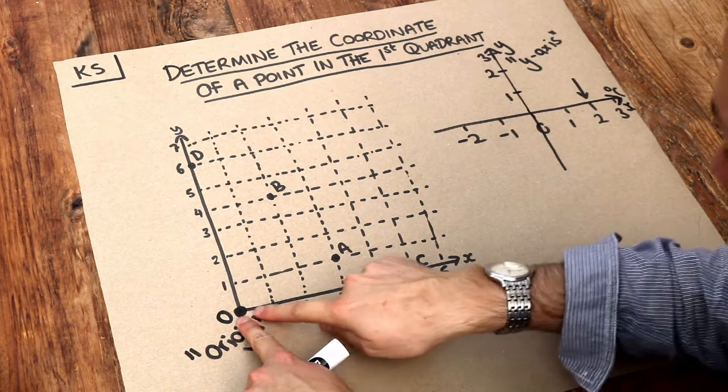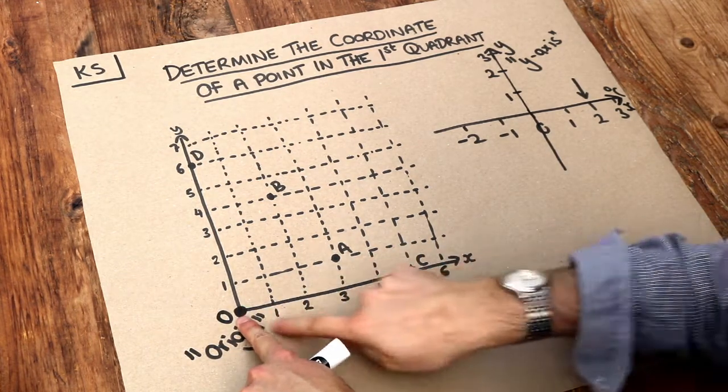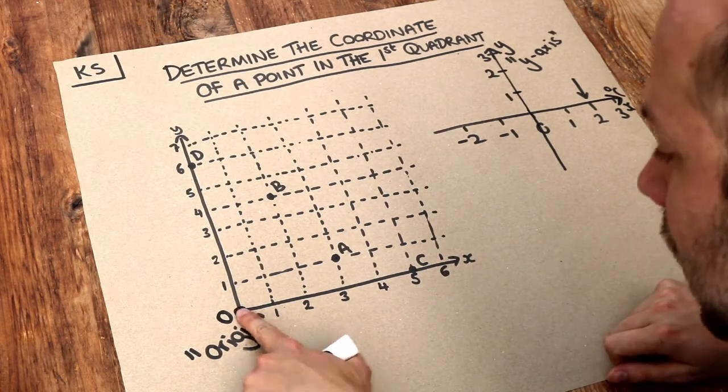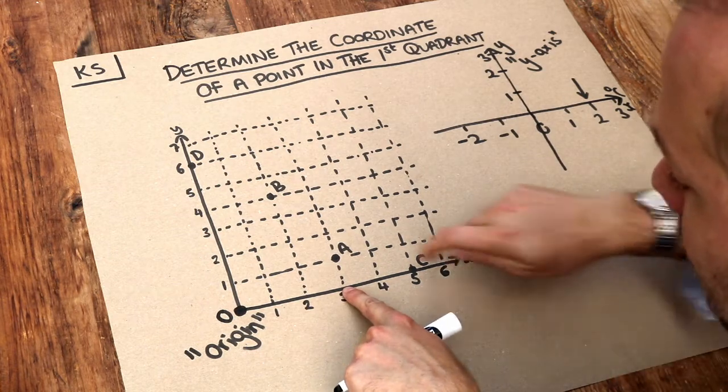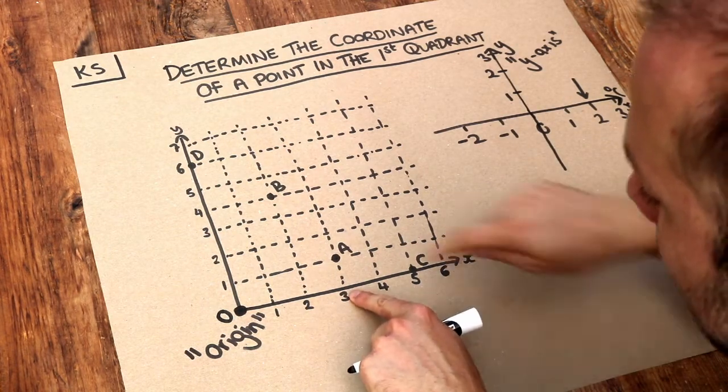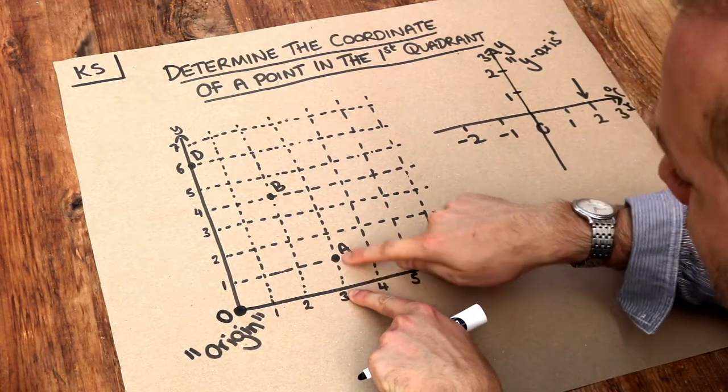How far along this left-right number line do we have to go, the x-axis? Well, can you see we have to travel one, two, three units to the right before we're at the correct left-right position. So we're directly under A at this point.